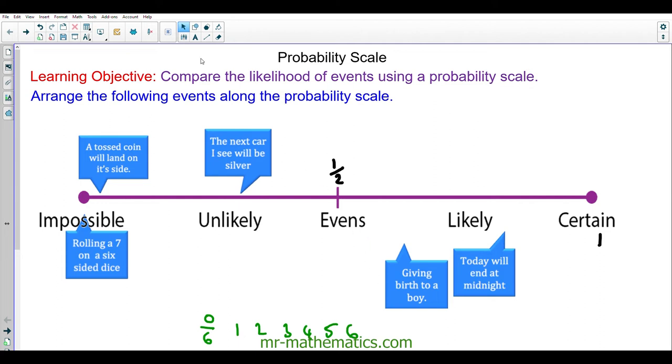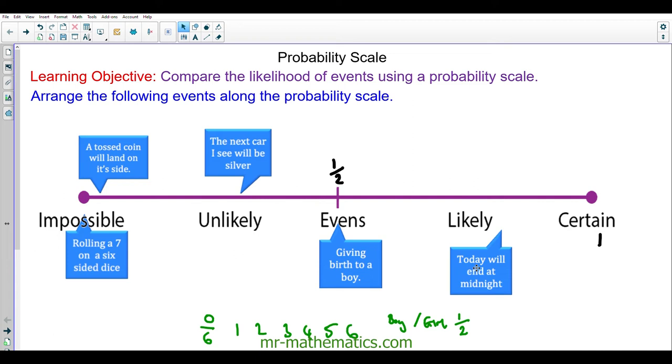Giving birth to a boy. Well, when you give birth you can have a boy or you can have a girl. So out of the two outcomes, one of them is a boy, the probability will be evens. And today will end at midnight. Well, every day ends at midnight so that will be certain.